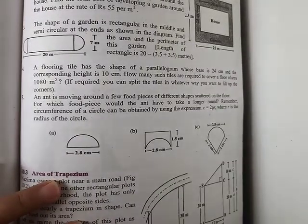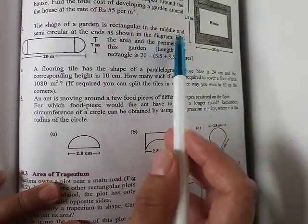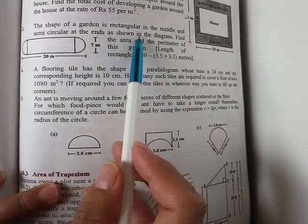Now, let's continue. Question number 3. The shape of a garden is rectangular in the middle and semicircular at the ends as shown in the diagram.